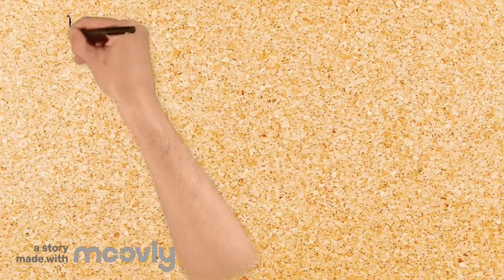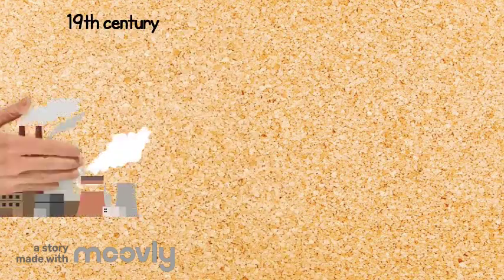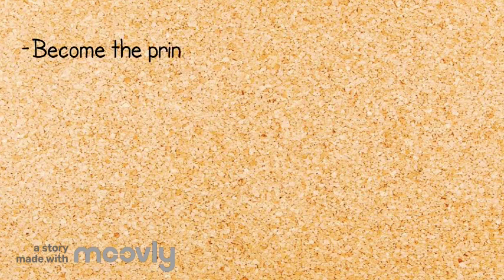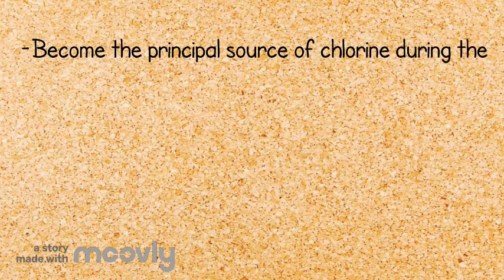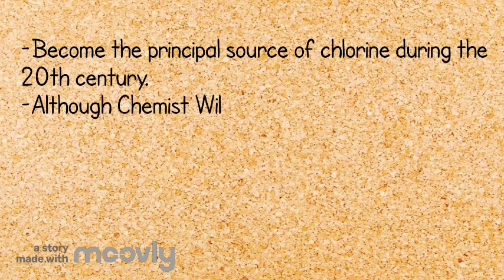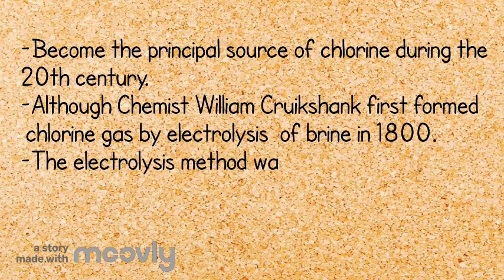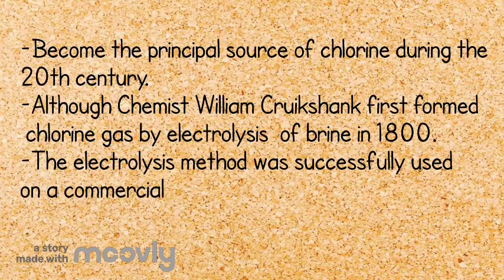The chloralkali process has been in use since the 19th century and is a major industry in the United States, Western Europe, and Japan. It became the principal source of chlorine during the 20th century. Although chemist William Cruikshank first formed chlorine gas by electrolysis of brine in 1800, the electrolysis method was successfully used on a commercial scale 90 years later.